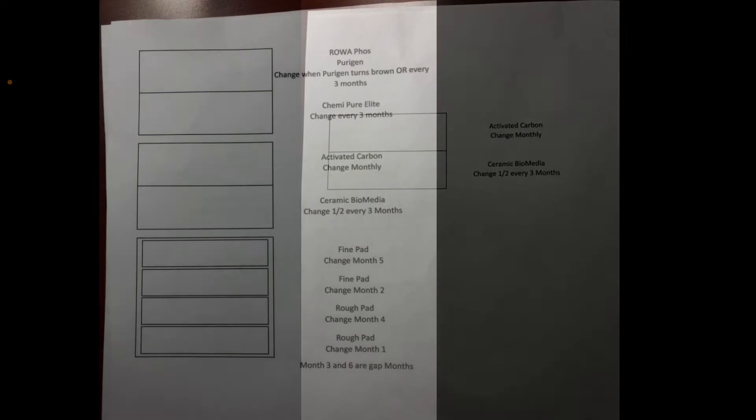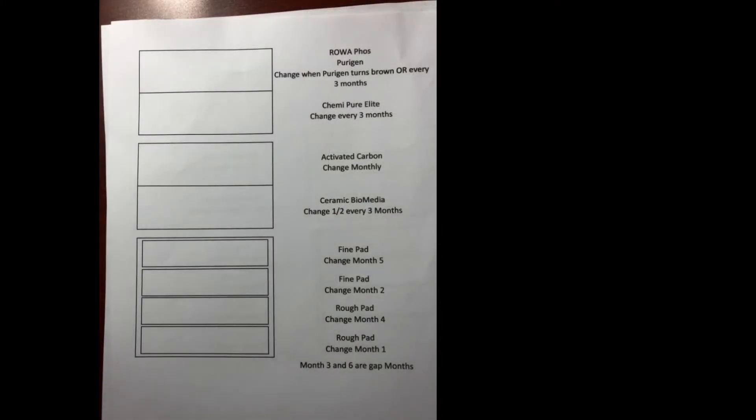So then we have the third basket that's going to stack on top here. That third basket has Kemi Pure Elite, Purigen, and Roa Foss. I really like the Kemi Pure Elite. It does great in filtering out everything. It has a little bit of everything in there. Keeps the tank nice and clean. I change out the Kemi Pure Elite every three months.